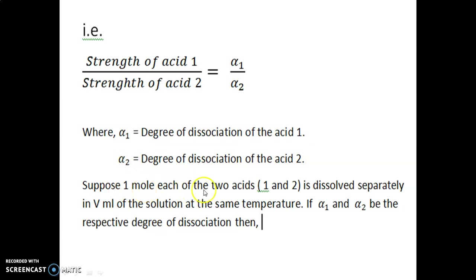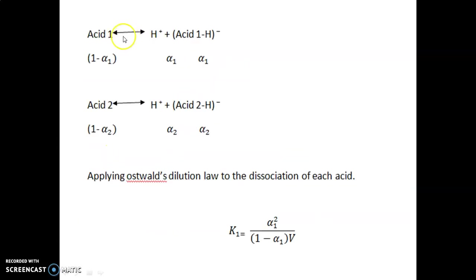Suppose we are taking one mole of each of the two acids — one mole of acid 1 and one mole of acid 2 — dissolved in V mL of solution at the same temperature. Alpha 1 and alpha 2 are their respective degrees of dissociation. For weak acid 1, it undergoes partial dissociation giving H⁺ ions. The concentration of the undissociated acid 1 becomes 1 minus alpha 1.